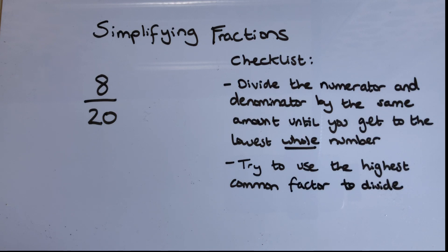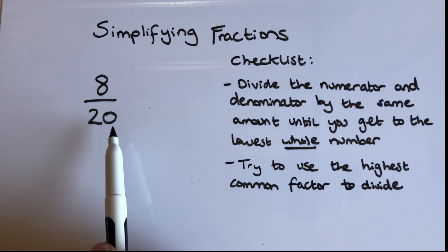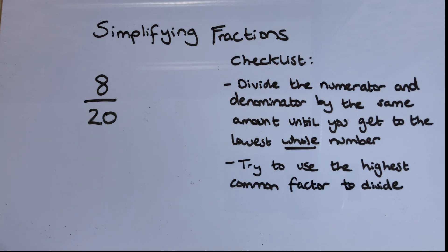Today we're looking at simplifying fractions. Our checklist says to simplify a fraction, you divide the numerator and the denominator—that's the top number and the bottom number—by the same amount until you get to the lowest whole number. Try to use the highest common factor to divide.